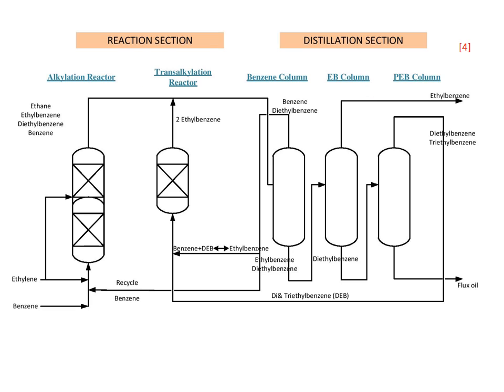In the alkylation reactor, ethylene and benzene are fed together. Zeolite is used as the catalyst, which operates adiabatically. Ethylene reacts completely, producing ethylbenzene, diethylbenzene, and benzene as the top product. These are fed to the benzene column.